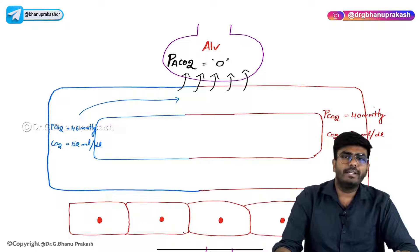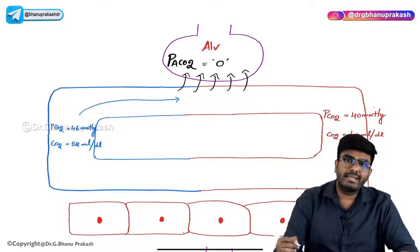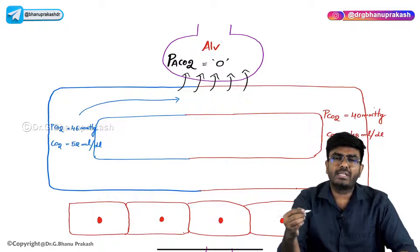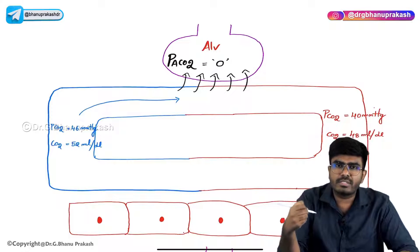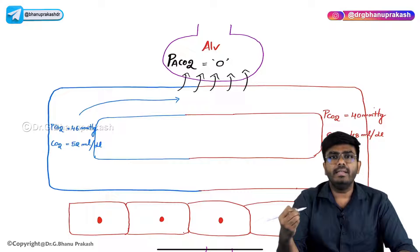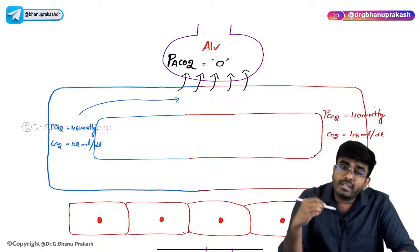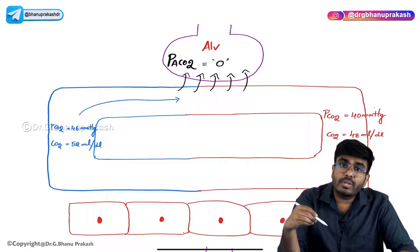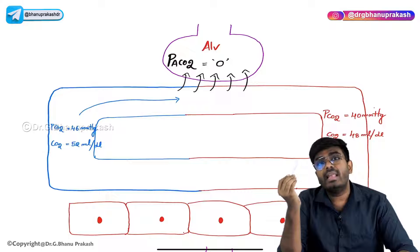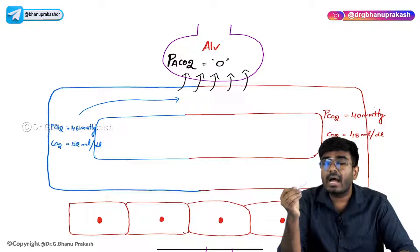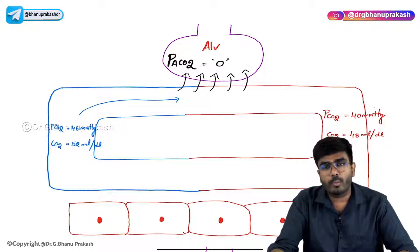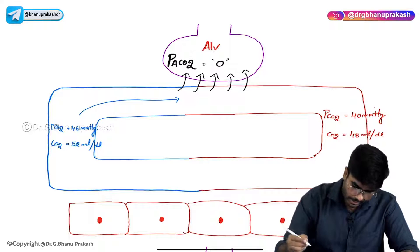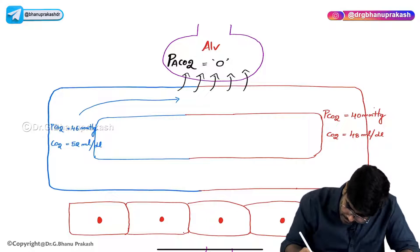Welcome back guys. In this video let's discuss about carbon dioxide transport. We all know that carbon dioxide is produced at the level of tissues, and that carbon dioxide from the tissues should be brought to the lungs, and from the lungs you have to take out the carbon dioxide from your body.